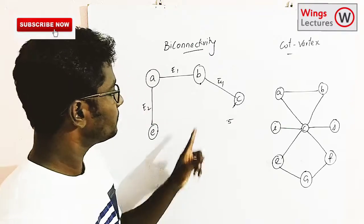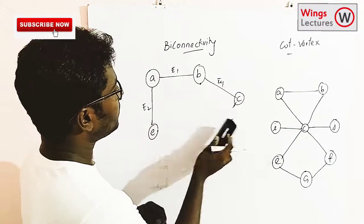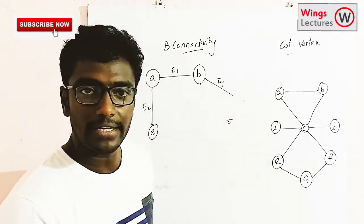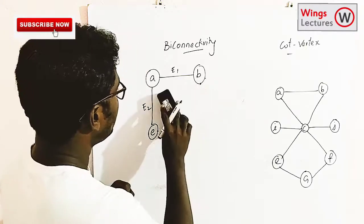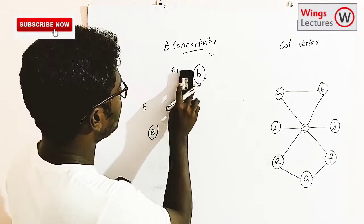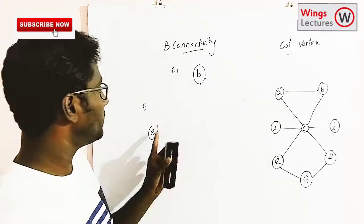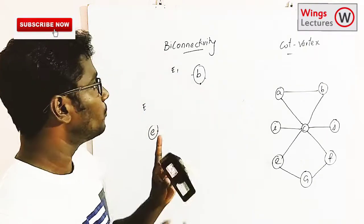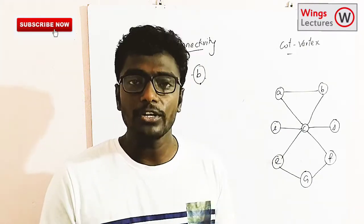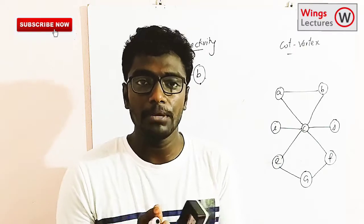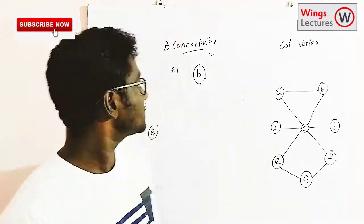For example, if I remove vertex F, the graph still remains as one graph — there won't be any breaking. But if I try to remove vertex H, then vertices E and B become isolated, with no connection between them. So if removing one vertex does not break the graph into two or more pieces, that state is called biconnectivity.